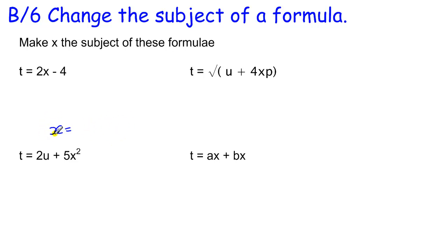There's nothing with the x on this side, so I'm going to manipulate it using my usual rules of solving equations to get everything to the other side apart from the x. To start with, in this one I'm going to add the 4, so I end up with t plus 4 equals 2x. 2 times x, I undo 2 times x by dividing by 2.